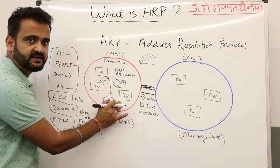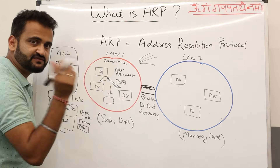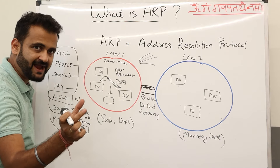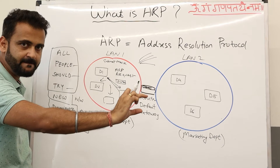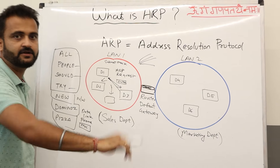Once the ARP response is received, Device 1 attaches the MAC address into that particular frame and sends it over.